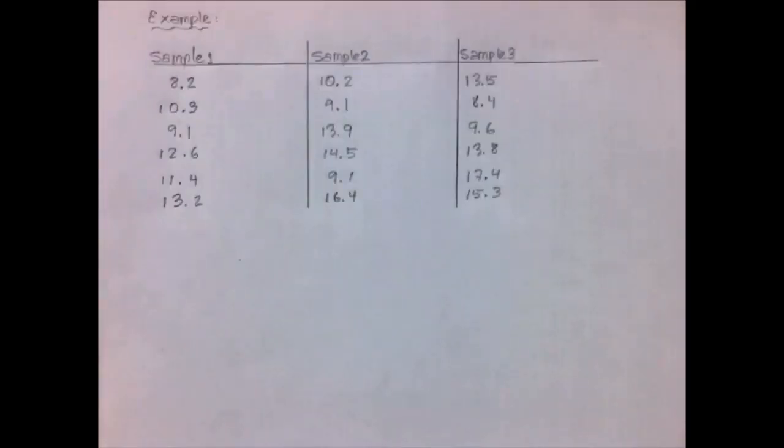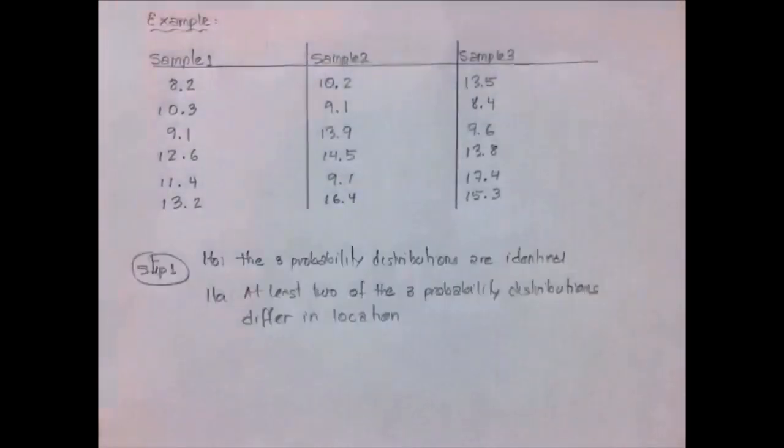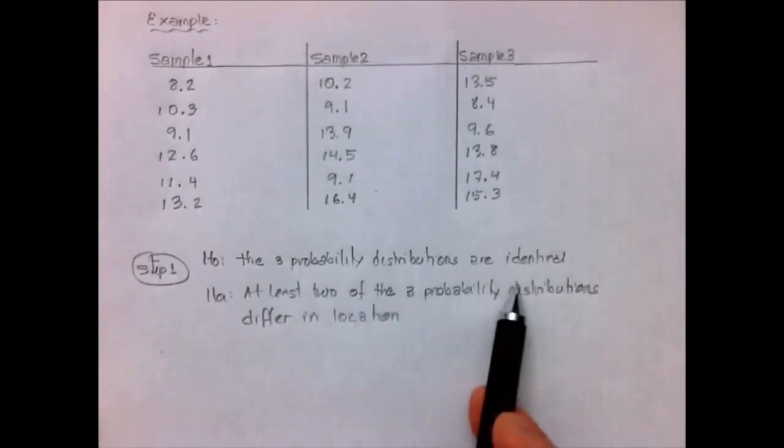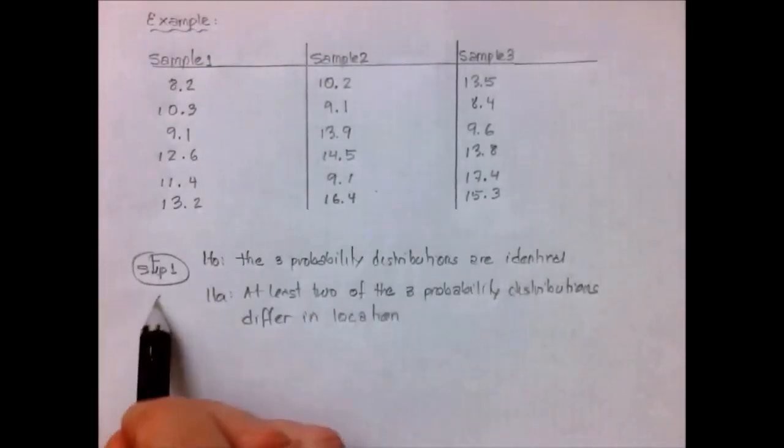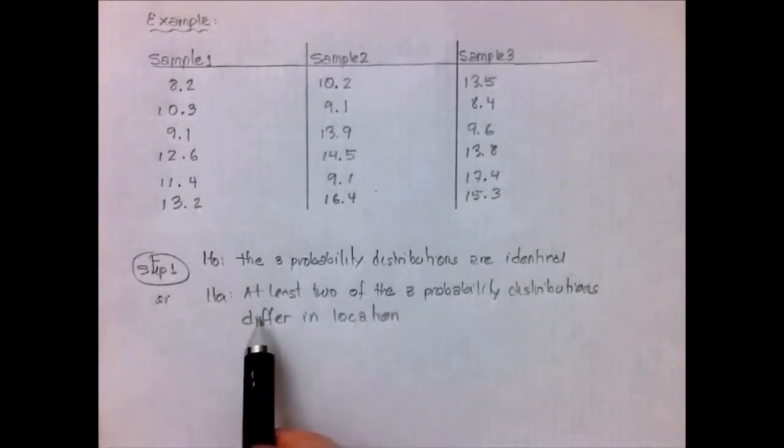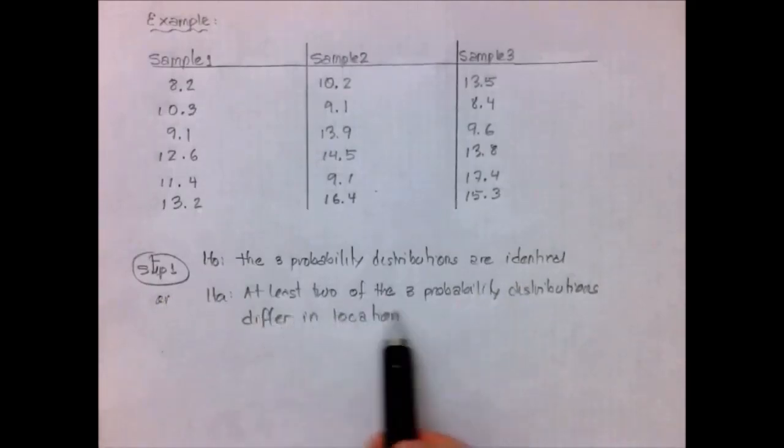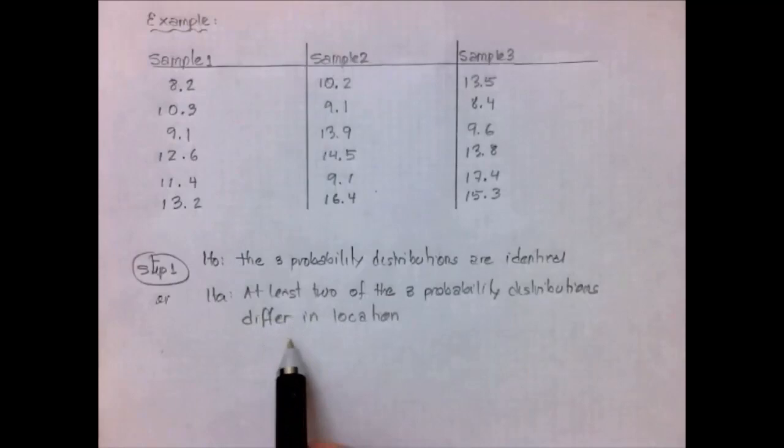Now, let's suppose we have three samples and we want to find out if the three probability distributions are identical or if at least two of the three probability distributions differ in location.